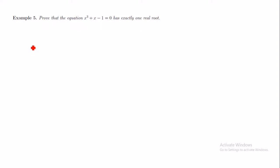All right folks, so this is the last example from the section 4.2 packet on the mean value theorem. The example says to prove that the equation x³ + x - 1 = 0 has exactly one real solution.